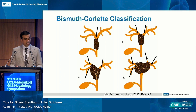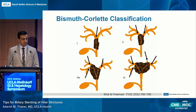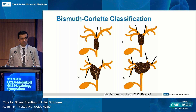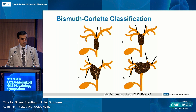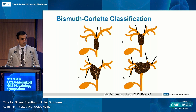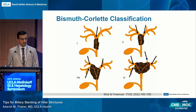We know the Bismuth-Corlette classification system, which helps us define and describe a stricture, particularly for reports and how you might manage it. Types 1 and 2 mostly involve the common hepatic duct, with type 2 abutting the hilum and bifurcation. Type 3A goes up the right hepatic duct, 3B up the left hepatic duct, and type 4 involves complex bilateral involvement.